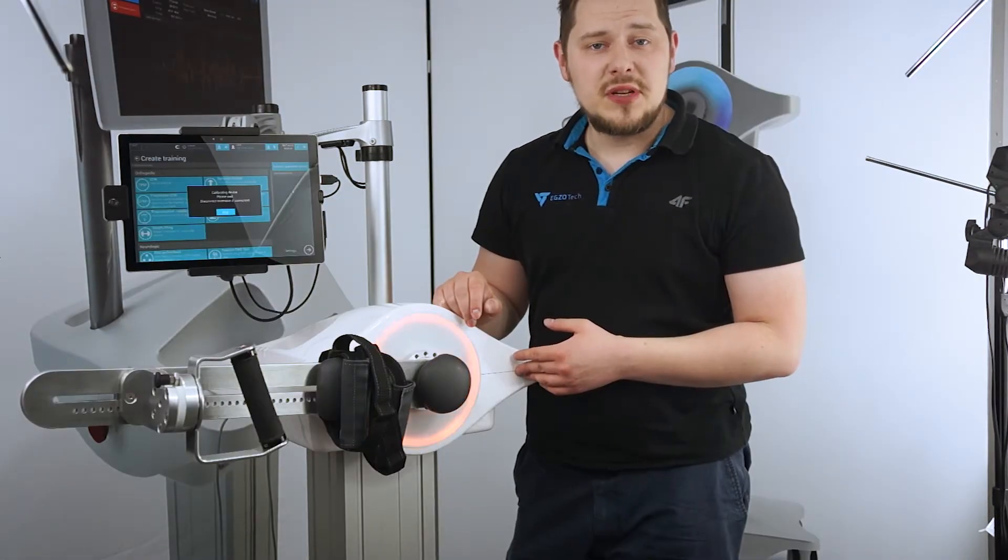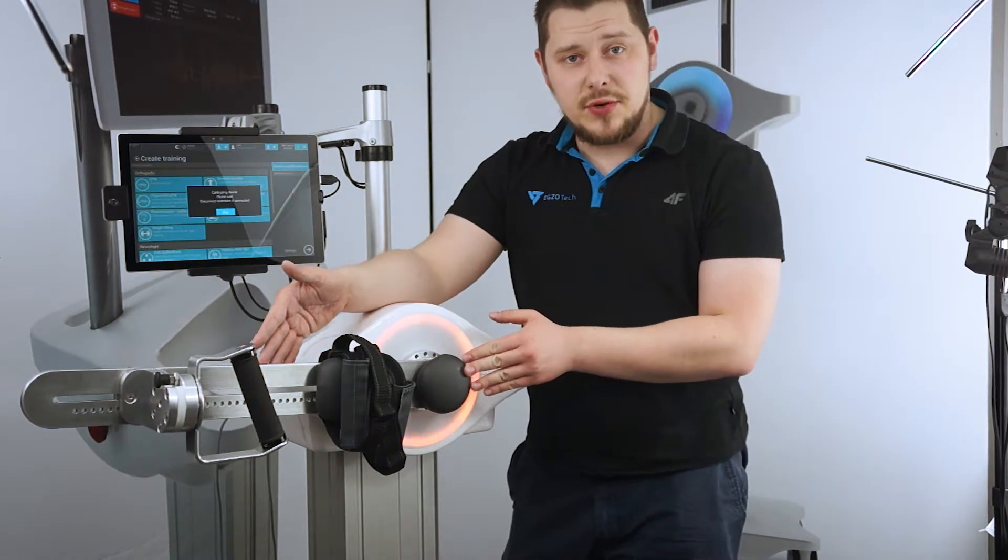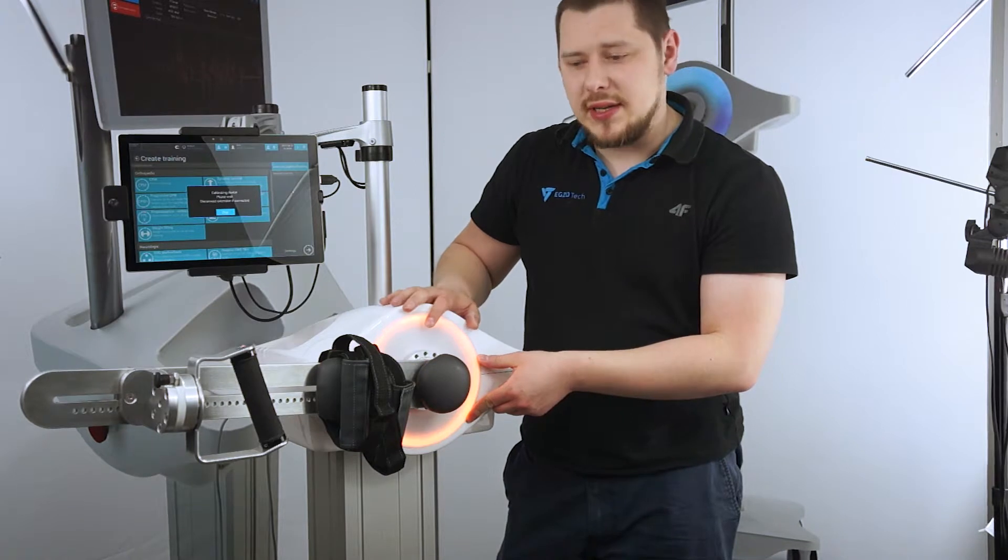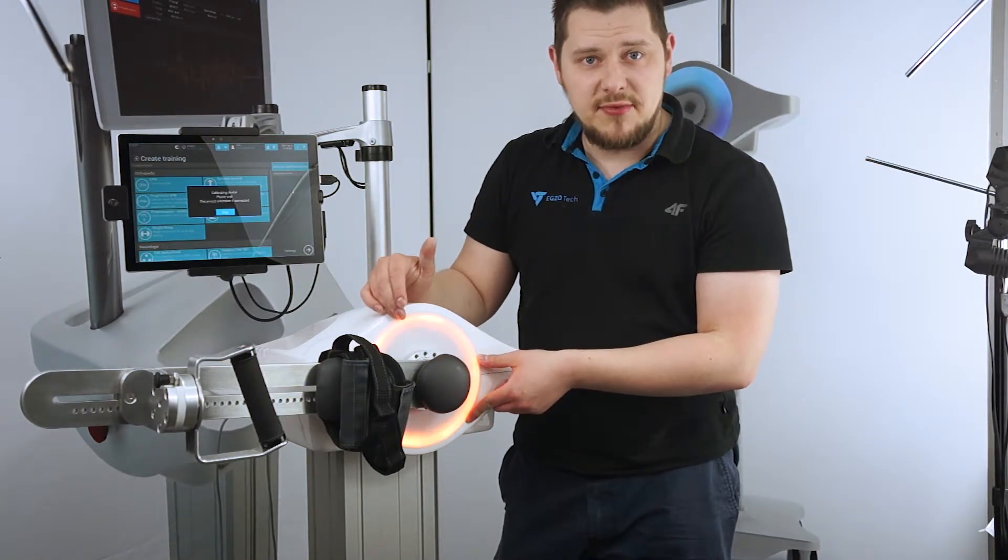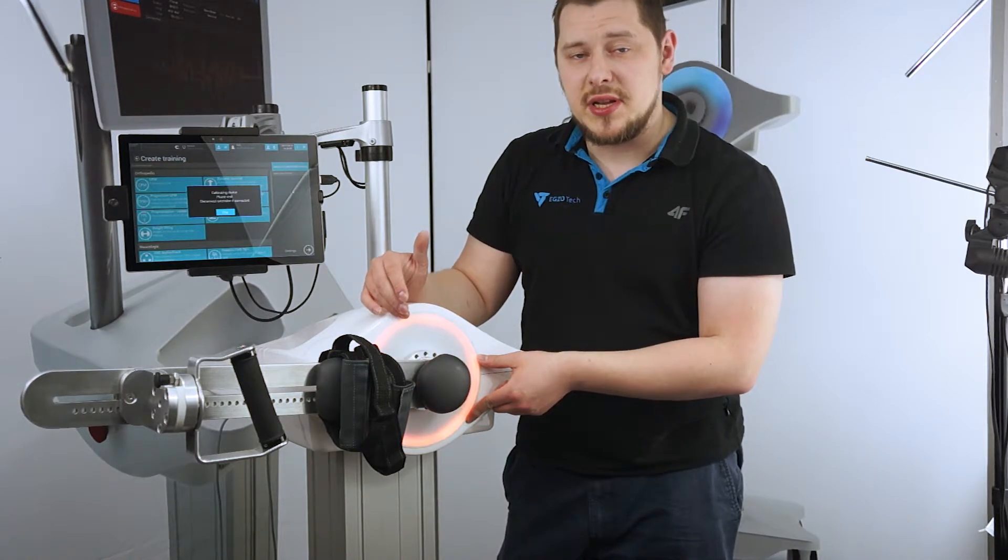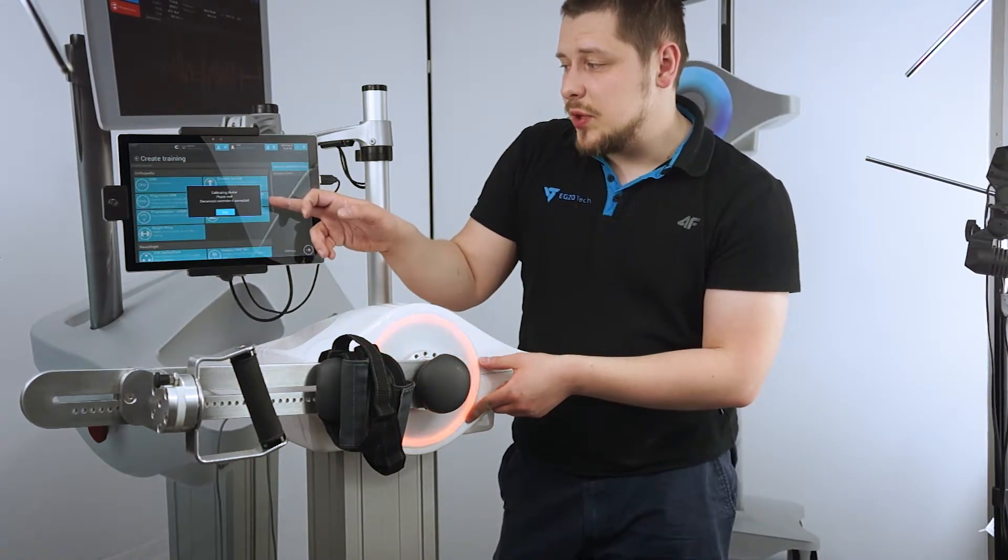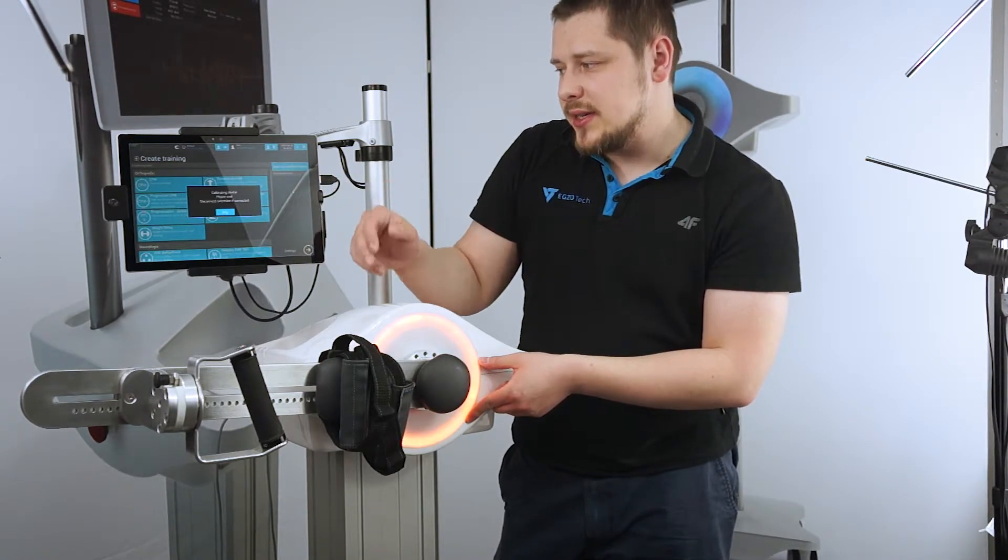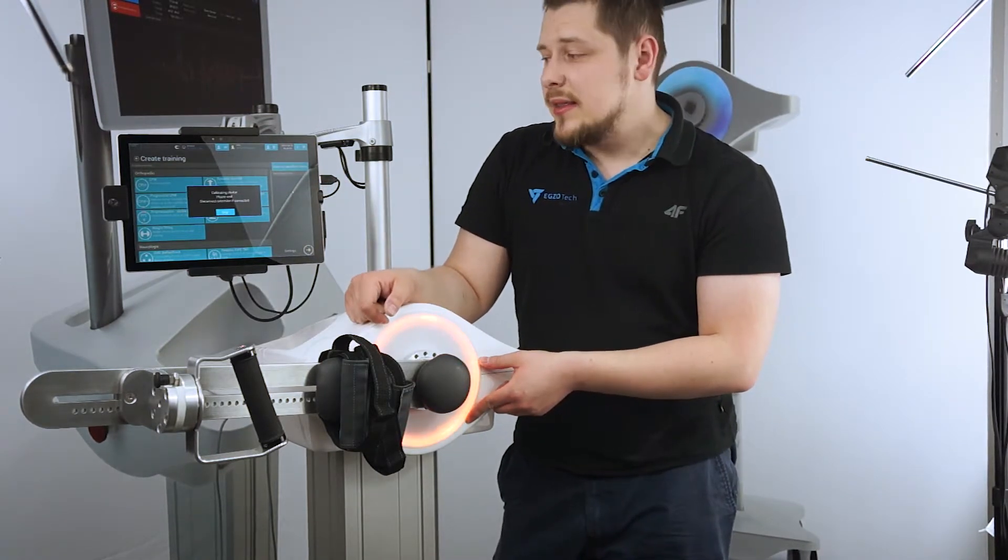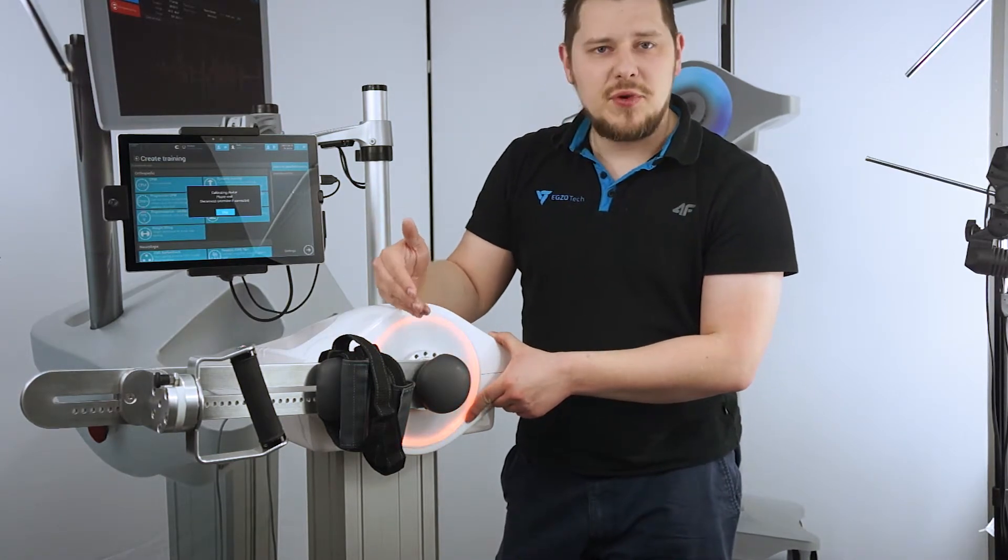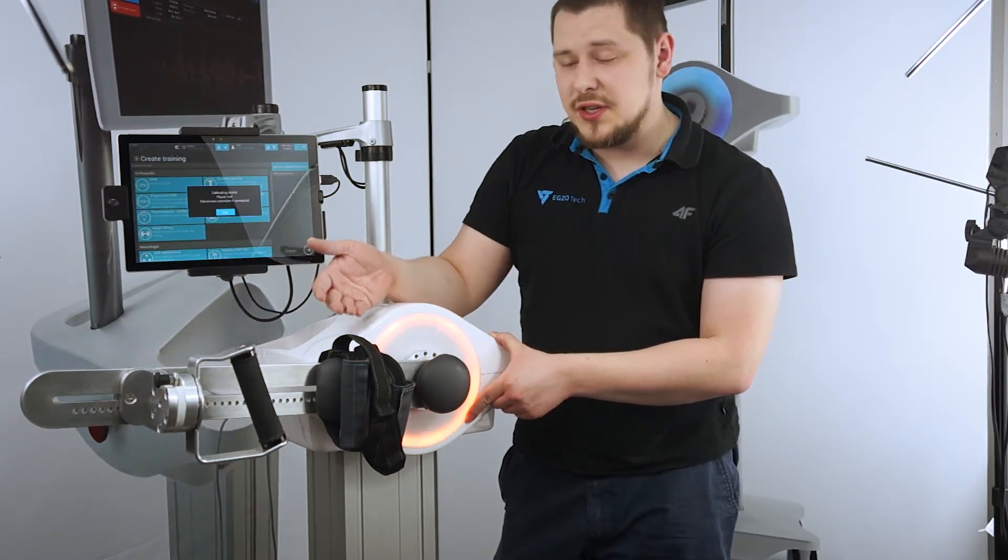From time to time, when we boot up Luna with an extension already connected, you can see an orange warning light pulsing from the lettering up front. That means that something is happening with Luna and she needs your attention. On the screen, we can see a notice: 'Calibrating device, please wait. Disconnect extension if connected.' That means that Luna wants to calibrate its sensor and there's something preventing her in doing that.